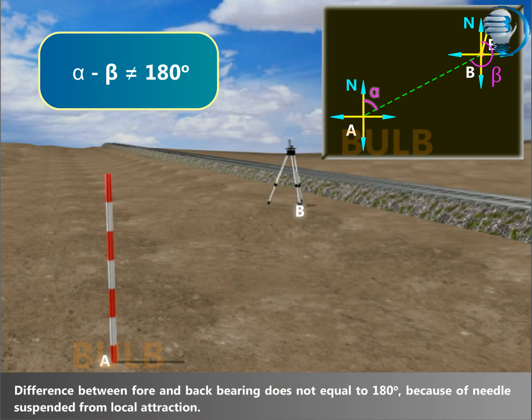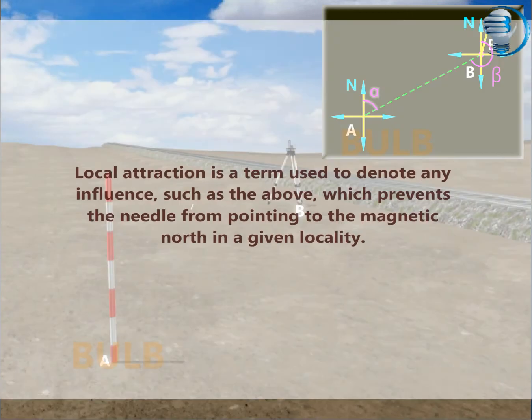The difference between fore and back bearing does not equal 180 degrees because of the needle being affected by local attraction. Local attraction is a term used to denote any influence which prevents the needle from pointing to the magnetic north in a given locality.